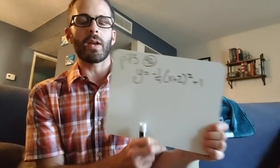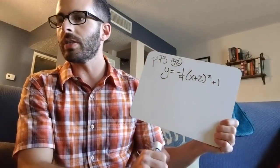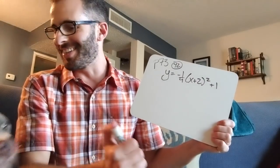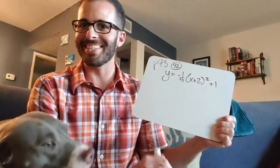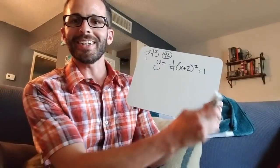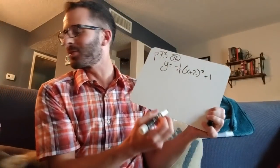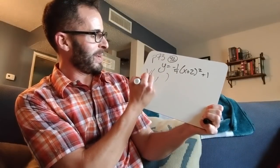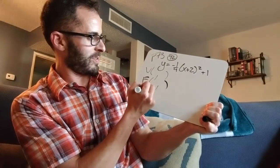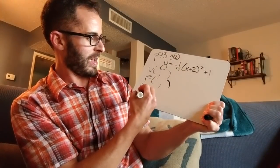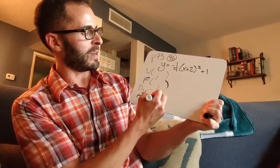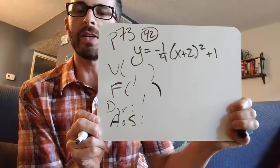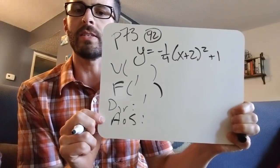All right. Okay, so the directions say that we need to identify the vertex, focus, directrix, and axis of symmetry. Sorry. This might get distracting really fast. Yeah, you're so cute. All right, so we need the vertex, we need the focus, we need the directrix, and we need the axis of symmetry. Okay, so I'm going to try to pause right there. Vertex, focus, directrix, axis, symmetry.